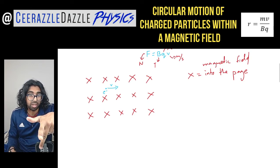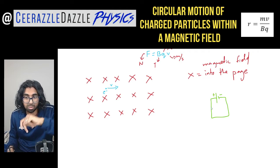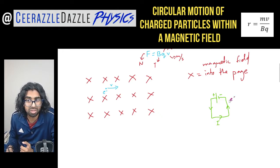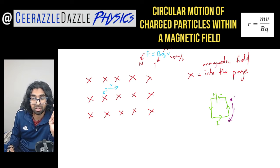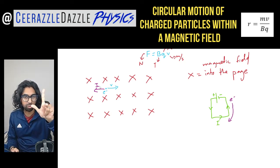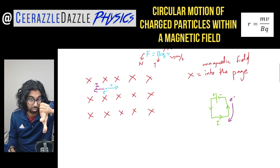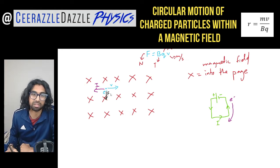Which way is the current going? In conventional current electricity, if I have a positive terminal and a negative terminal, the current goes from positive to negative. But electrons are negatively charged, so they can't move toward the negative terminal — they're repelled. So the electron movement is in the opposite direction to the current. The current direction is backwards relative to the electron motion. Using Fleming's left-hand rule with the field into the page and the current backwards, the force on this charged particle is going to be downwards.